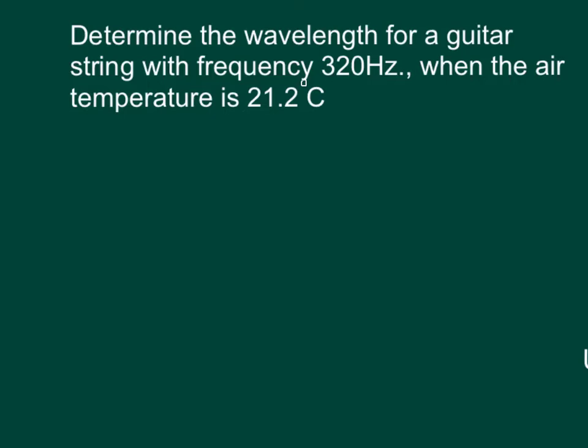So in order to solve for this, we're going to have to use the universal wave equation, and the universal wave equation is V equals F lambda. This is our speed of the wave. This is our frequency of the wave, and this is the wavelength.